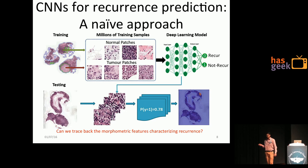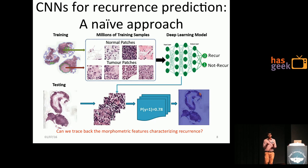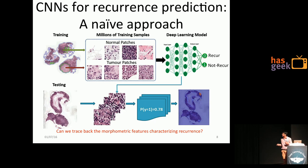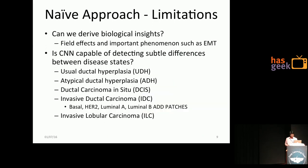The question is: can we trace back the morphometric features characterizing recurrence using this naive approach? For that, we have to move backwards — it's not just getting labels correctly, it's also understanding what the CNN is learning, what the characteristic morphological differences are, and what the pathologist should write in their report. This naive approach is limited in that sense. It may give results, but for the pathologist, we may not be able to explain what we have learned.